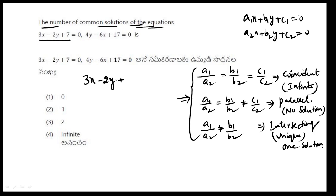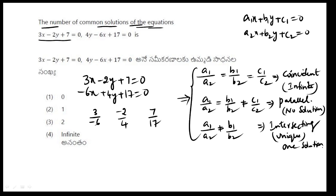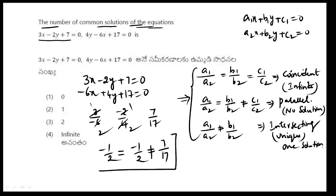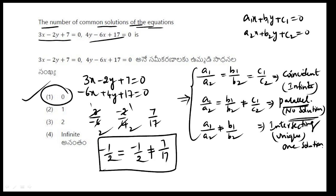Let's solve a problem. Given the equations: 3x minus 2y plus 7 equals 0, and minus 6x plus 4y plus 17 equals 0. We check the ratios: A1 by A2 equals B1 by B2, but not equal to C1 by C2. Therefore, these equations have no solution — the lines are parallel.